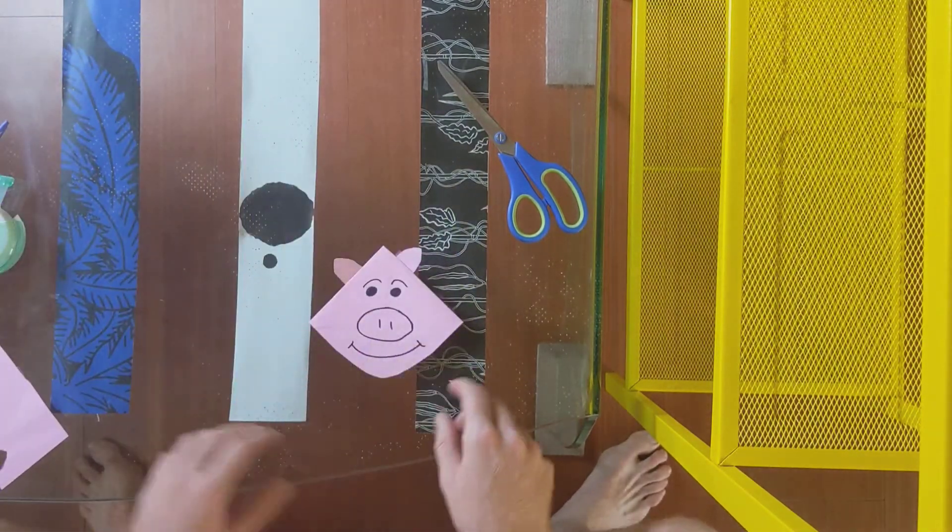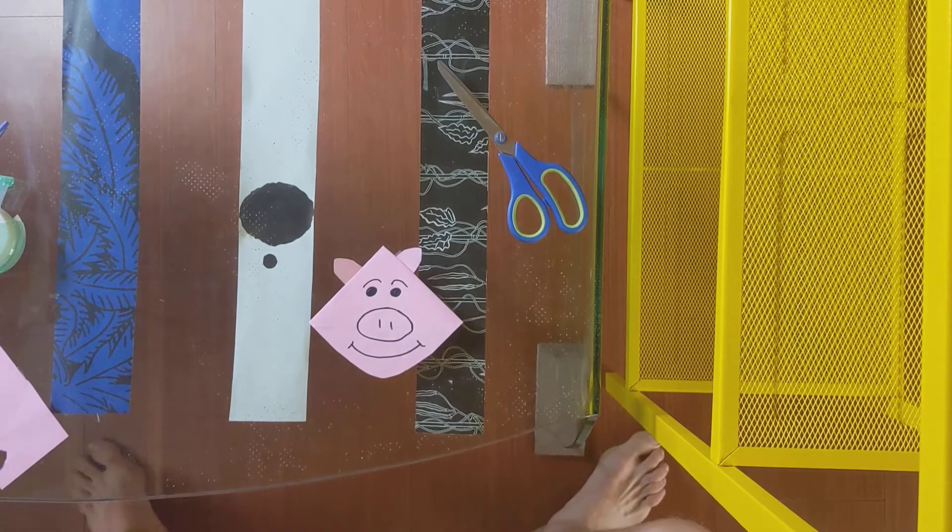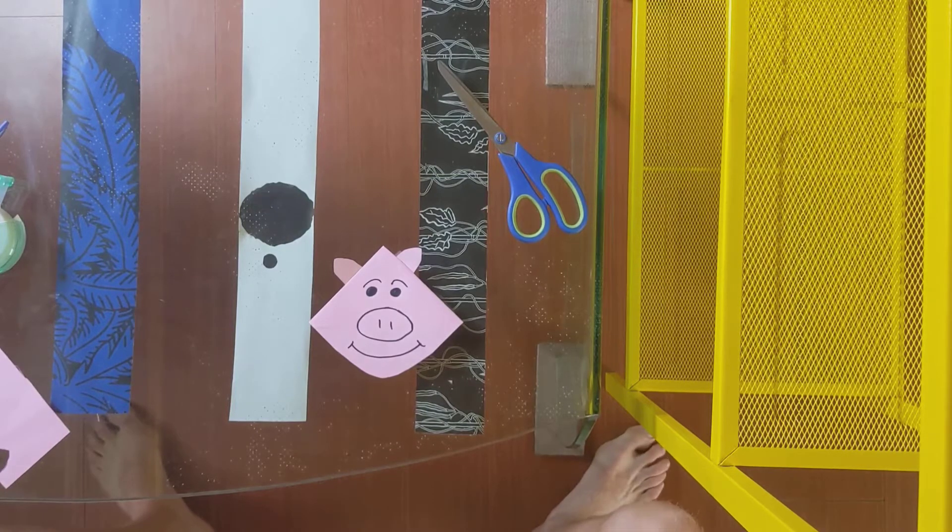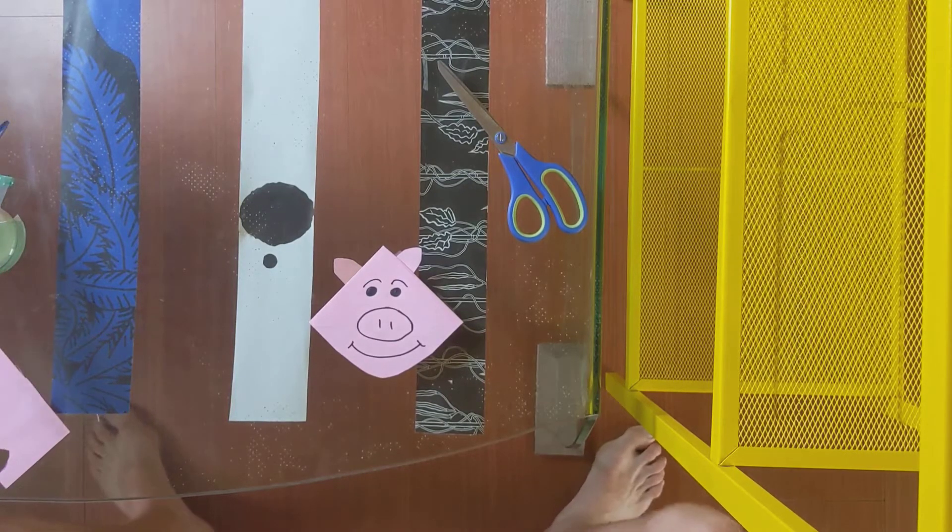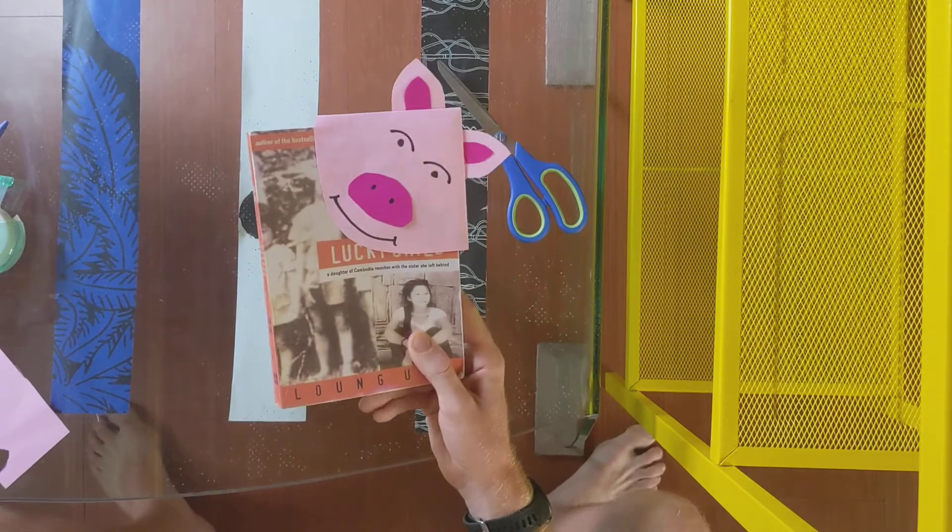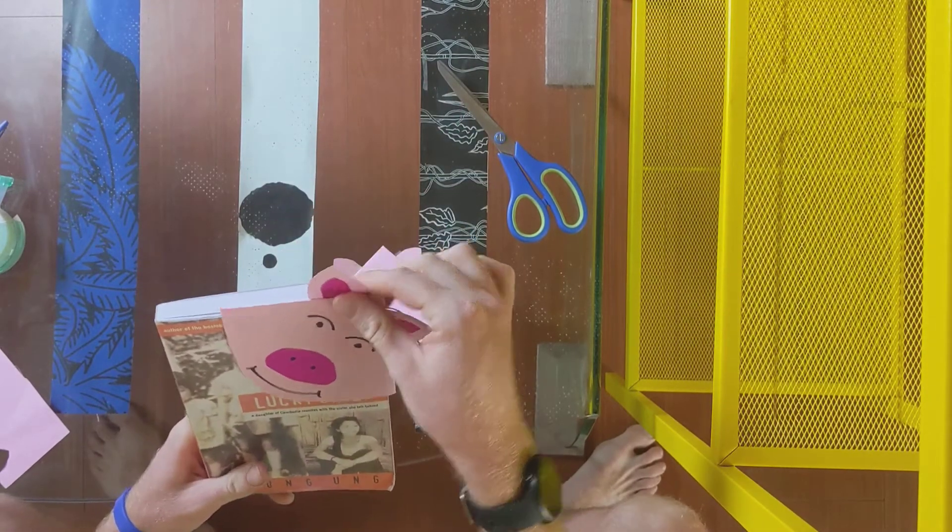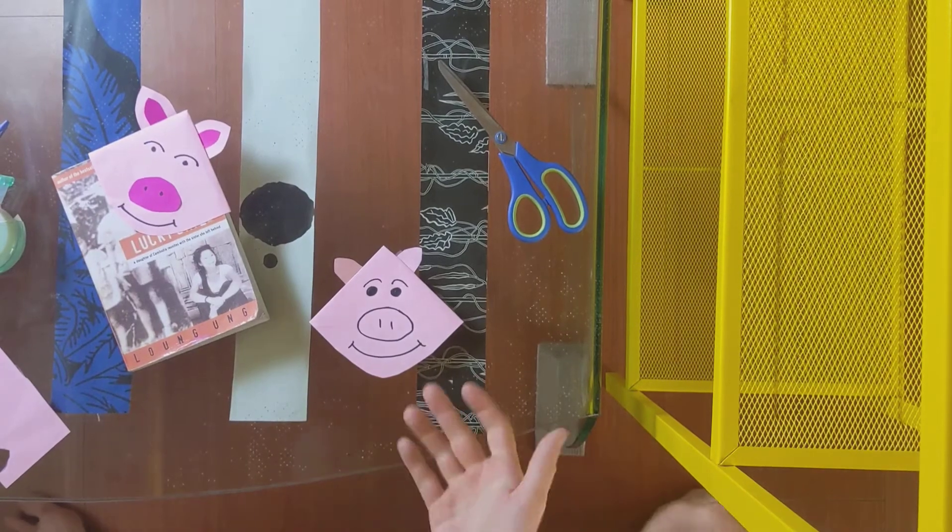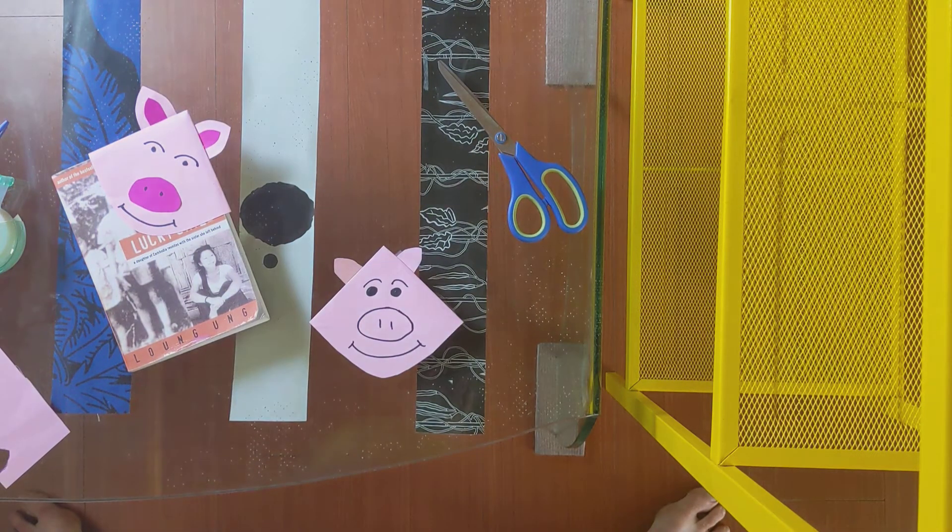You can make whatever animal you want. You can make a cat. You can make a dog. You can make a penguin. You can make a hippopotamus. You can make a dinosaur. Whatever you want. And then after you are done, just start reading a book and put your bookmark in wherever you stop. I hope you liked today's craft. Please give me a high five. Good job. And I'll see you later. Bye bye.